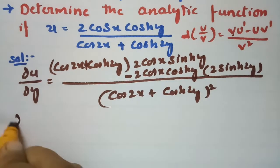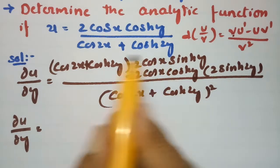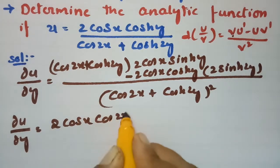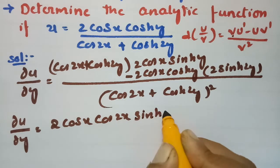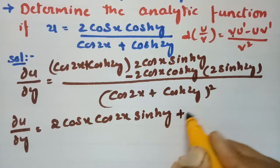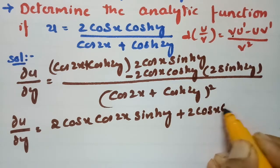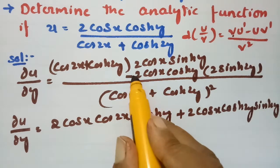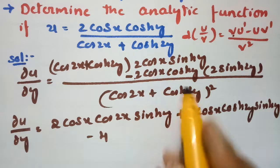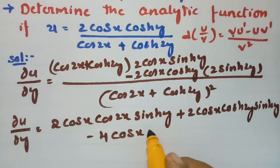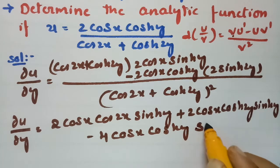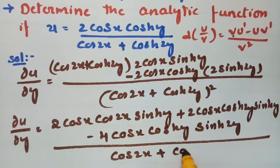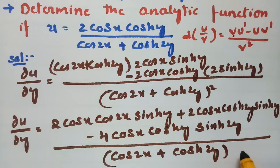So the value of ∂u/∂y becomes: 2cos(x)·cos(2x)·sinh(y) plus 2cos(x)·cosh(2y)·sinh(y) minus 4cos(x)·cosh(y)·sinh(2y)·cosh(2y), all divided by (cos(2x) + cosh(2y))².